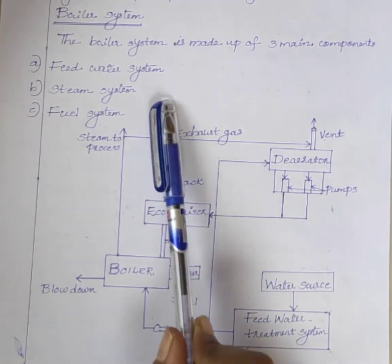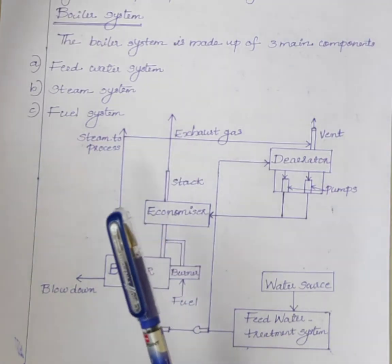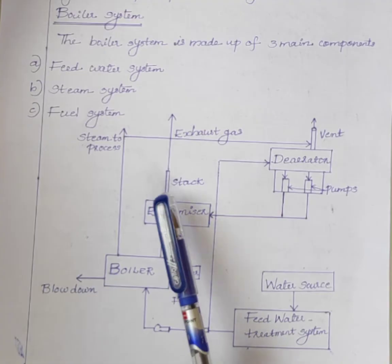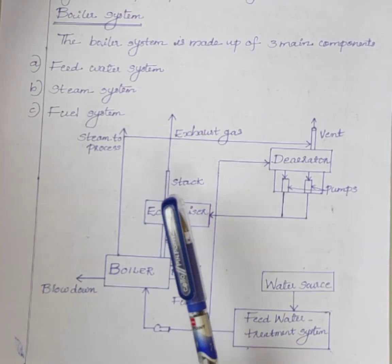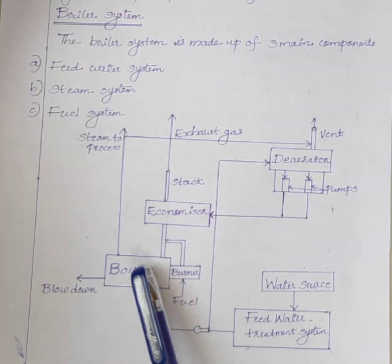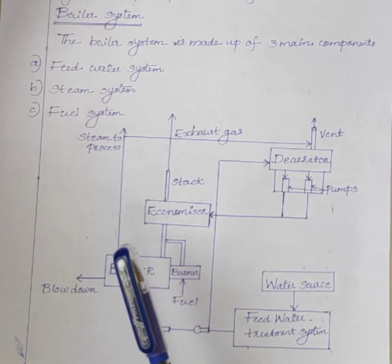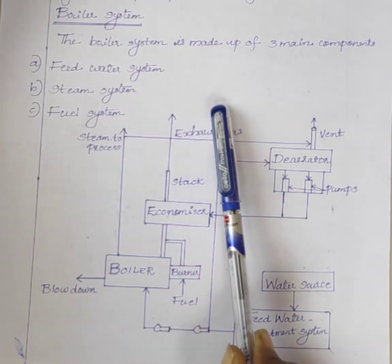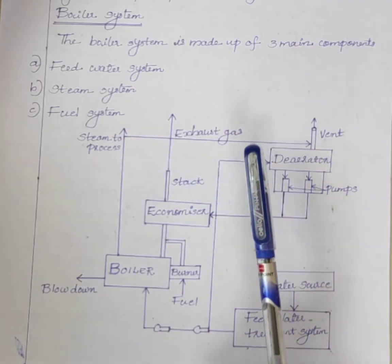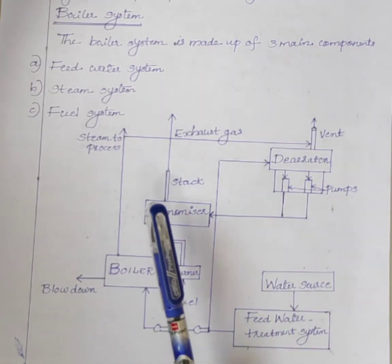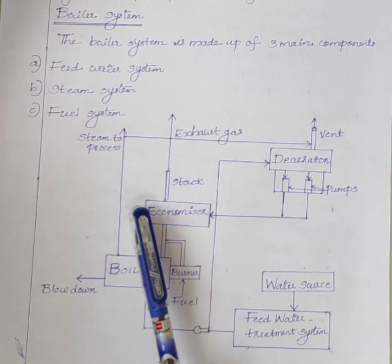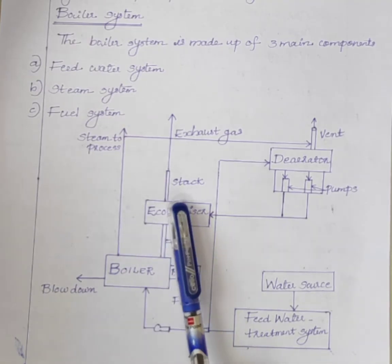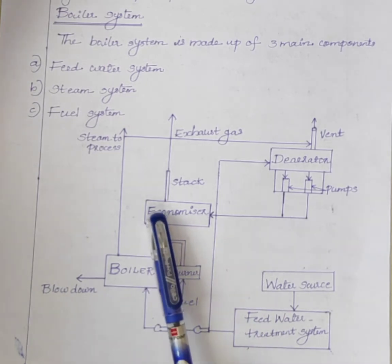The second component is steam system. Steam systems are responsible to collect and control all the generated steam in the process. The steam system sends steam generated in the process to the point of use through the pipes. Throughout the process, the steam pressure is controlled and regulated with the help of valves, steam pressure gauges, etc.